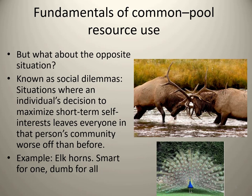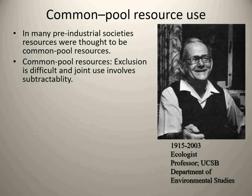Self-interest leaves everyone worse off — including the self-interested individual in this case. Social dilemmas, unlike the invisible hand, do not generally benefit the whole group; they are a cost to the group. In many pre-industrial societies, resources like pasture land, forests, fisheries, and lakes were common pool resources. Common pool resources are defined by two criteria: exclusion is difficult — it's too expensive or impossible to exclude others — and joint use involves subtractability, meaning each user's exploitation leaves less for the next person.